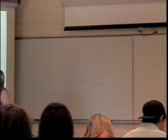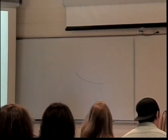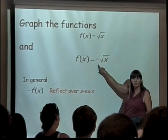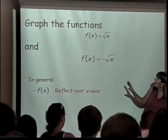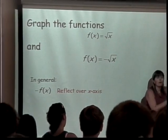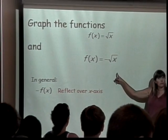So basically it took all the y values I had before and made them all negative, or the opposite of what they were before. That is, again, a vertical thing because it was outside the function.